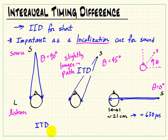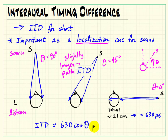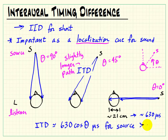It turns out that the time difference can be stated as 630 times the cosine of that angle theta, in microseconds. This is valid for sources that are at least one meter away.